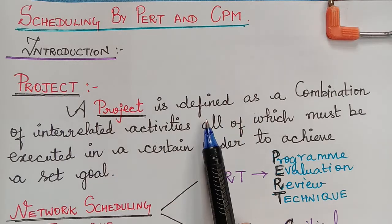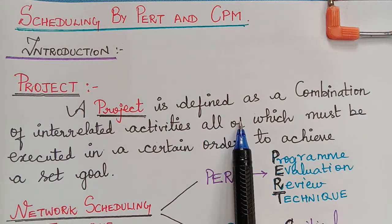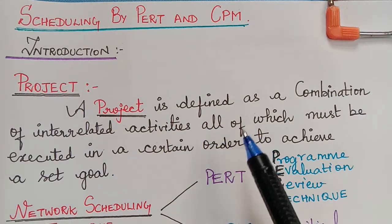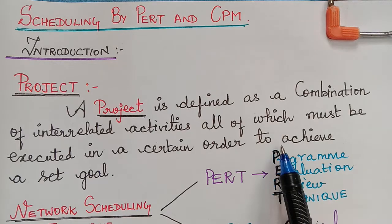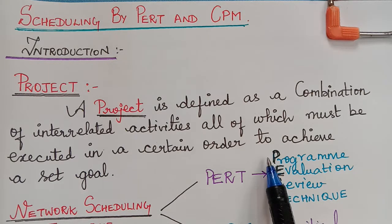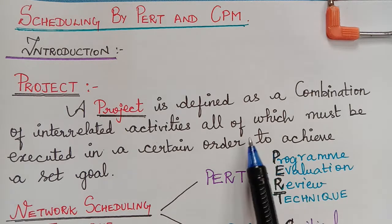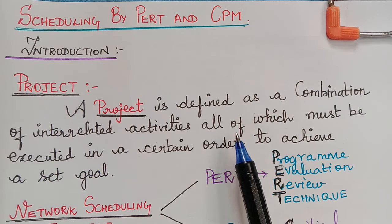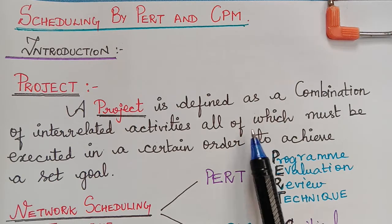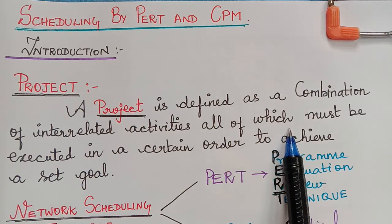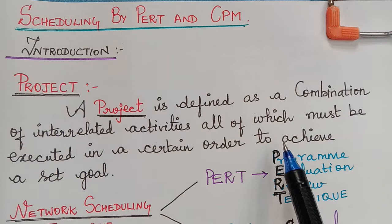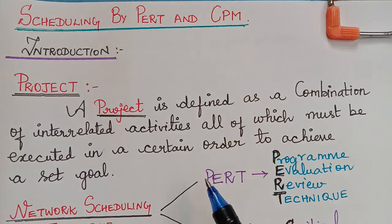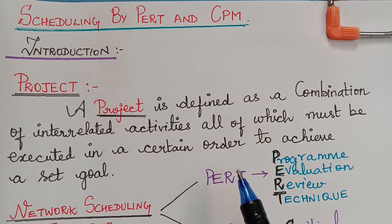A large and complex project usually involves a number of interrelated activities. These activities involve resources like time, money, men, machines, and materials. A systematic scientific approach has become a necessity for such projects.